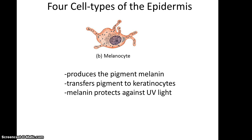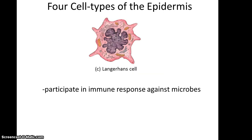The melanocytes are the cells that produce the pigment melanin, and it is this pigment that protects us from damage by UV light. The melanocytes will transfer this pigment into the keratinocytes — so the melanocytes produce it and then move it to the keratinocytes. The Langerhans cells participate in an immune response against microbes, so they are technically part of the immune system.